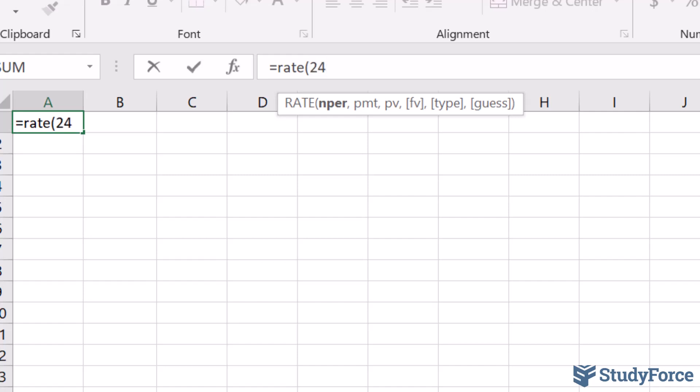PMT represents the payments per period, and it was 125, followed by PV. PV represents the present value. Now, be careful how you type in your PV. It's supposed to be the negative version of your present value. So for us, it was 2,300. You would type in negative 2,300.